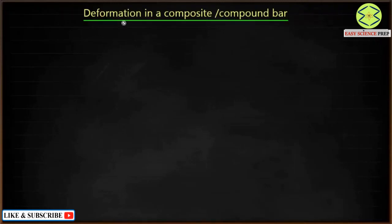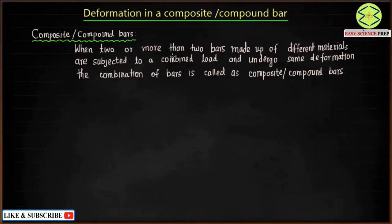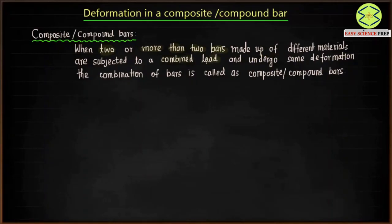Today we are going to discuss about the deformation in composite or compound bars. A composite or compound bar is defined as when two or more bars made up of different materials are subjected to a combined load and undergo the same deformation, the combination of bars is called a composite bar.